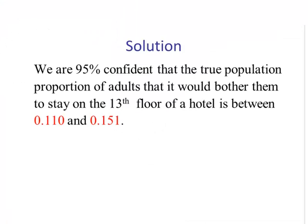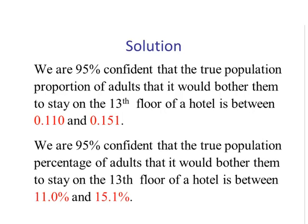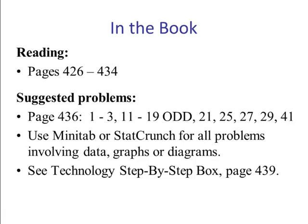To interpret our confidence interval, we would say we are 95% confident that the true population proportion of adults that it would bother to stay on the 13th floor of a hotel is between 0.110 and 0.151. Another way to say that is we are 95% confident that the true population percentage is between 11% and 15.1%. Here are the readings and suggested problems from the text.